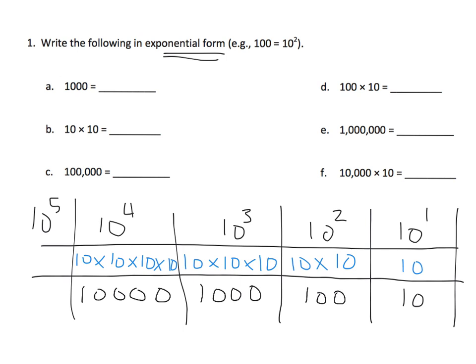What we want is for students to start recognizing a pattern. Teachers and parents, give your students an opportunity to look at these three rows. The patterns not only exist in each row, but there are also patterns that exist in each column. For example, 10 to the third means there are three tens and three zeros. 10 to the fourth means there are four tens and four zeros. We want students to see the patterns in each column and in each row.